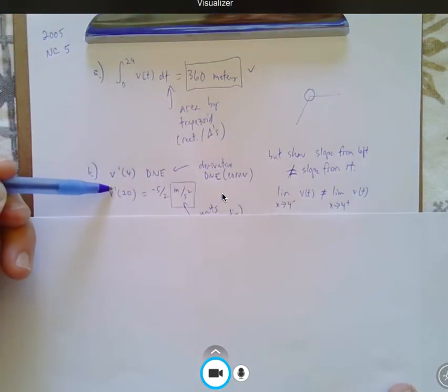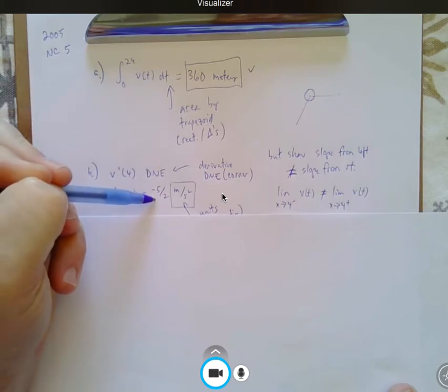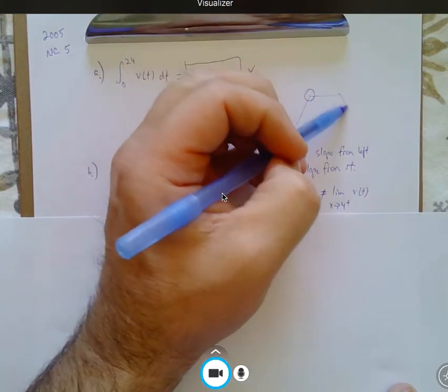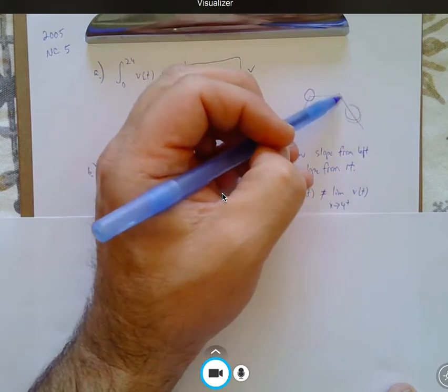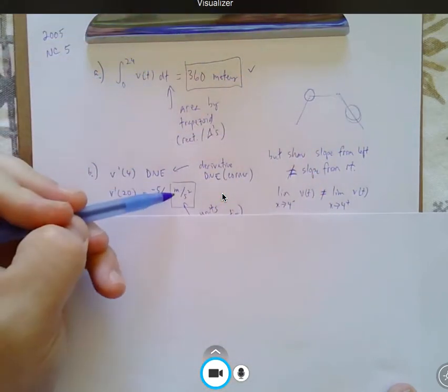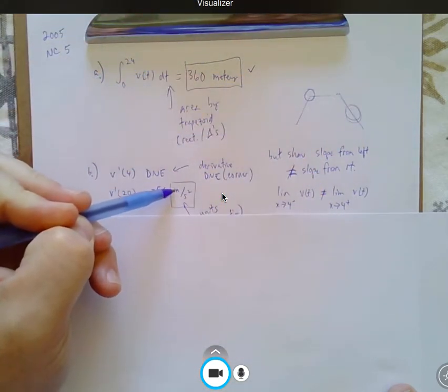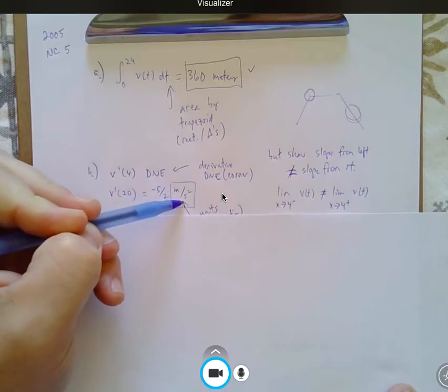The velocity prime at 20, which is the acceleration at time 20, is negative 5 halves because that's the slope of the line from time 16 to time 24. And don't forget the units for full credit for acceleration quantity over time squared.